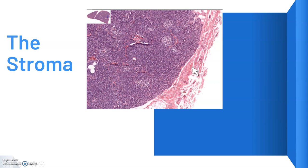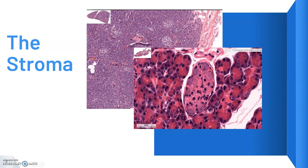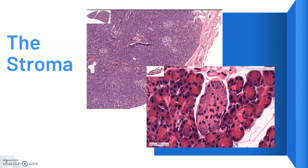The stroma is composed mostly by a capsule — a connective tissue that covers the exterior surface of the pancreas. This capsule extends into the inner portion, dividing the pancreas into lobules and lobes. It also contains blood vessels and nerve tissue such as parasympathetic ganglion cells.